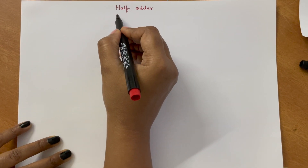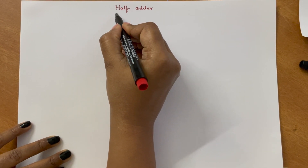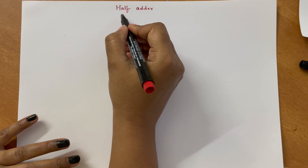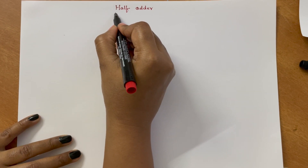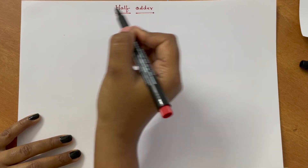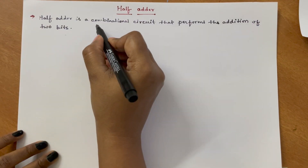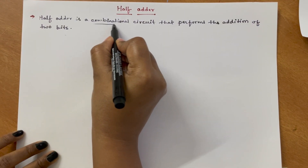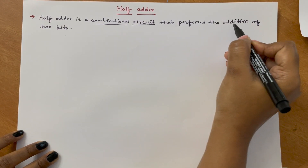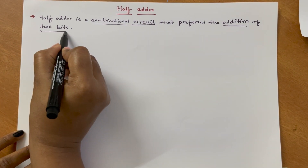Hello friends, welcome to our YouTube channel RF Design Basics. In this lecture we will study about the half adder. A half adder is a combinational circuit that performs the addition of 2 bits.